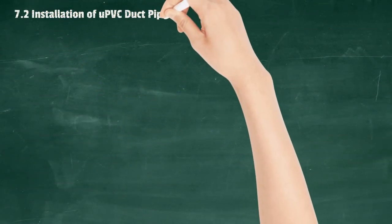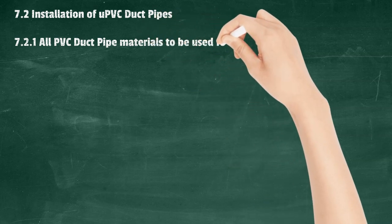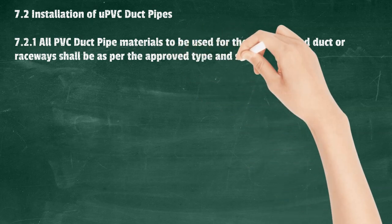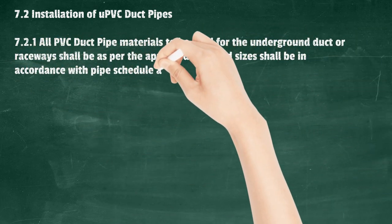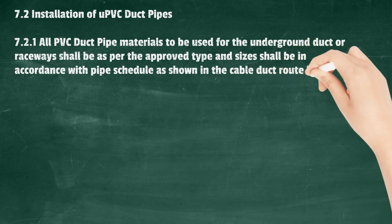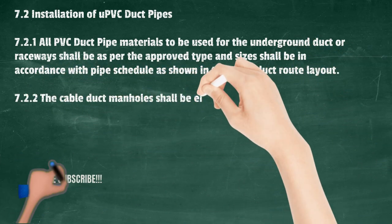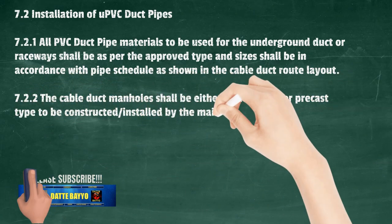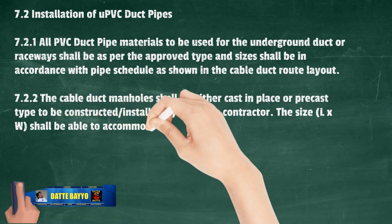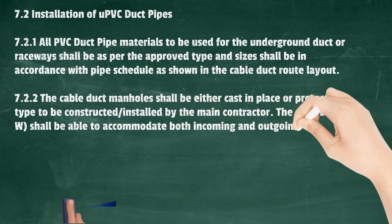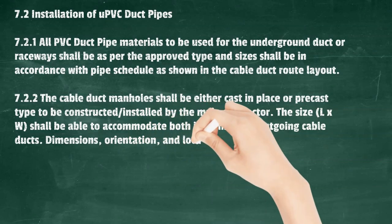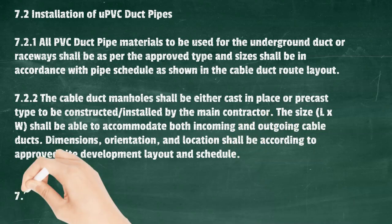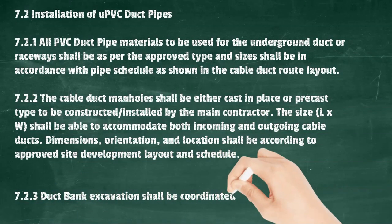Installation of UPVC Duct Pipes: All PVC duct pipe materials used for underground duct or raceways shall be as per the approved type and sizes in accordance with the pipe schedule as shown in the cable duct route layout. Cable duct manholes shall be either cast-in-place or precast type, constructed/installed by the main contractor. The size (L x W) shall accommodate both incoming and outgoing cable ducts. Dimensions, orientation, and location shall be according to the approved site development layout and schedule.